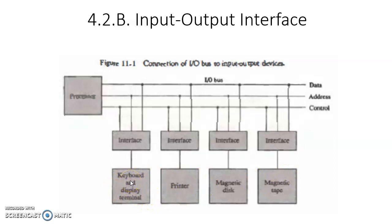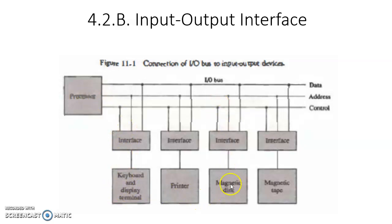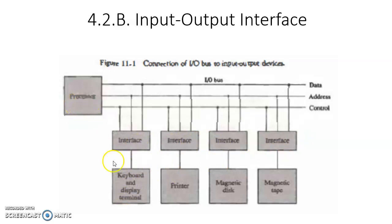The keyboard sends 8-bit words to the processor, whereas the printer receives commands from the processor — this is an input device and this is an output device, and it will print on paper. Here, the mechanical action of the user must be converted into electrical information. Similarly, for the magnetic disk, data will be converted into magnetic form, or while reading data from the magnetic disk, the magnetic form must be converted into electrical form. So each and every peripheral device requires a distinct interface, and peripheral devices are connected to the processor through this interface.